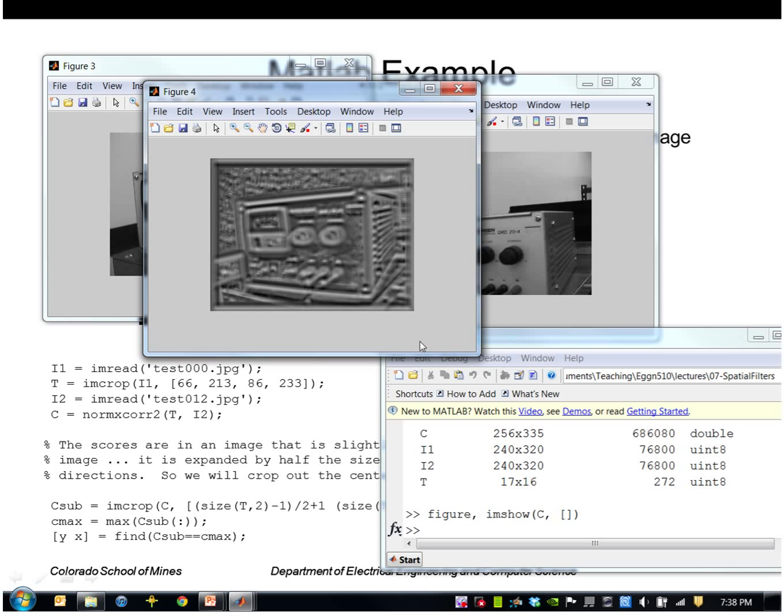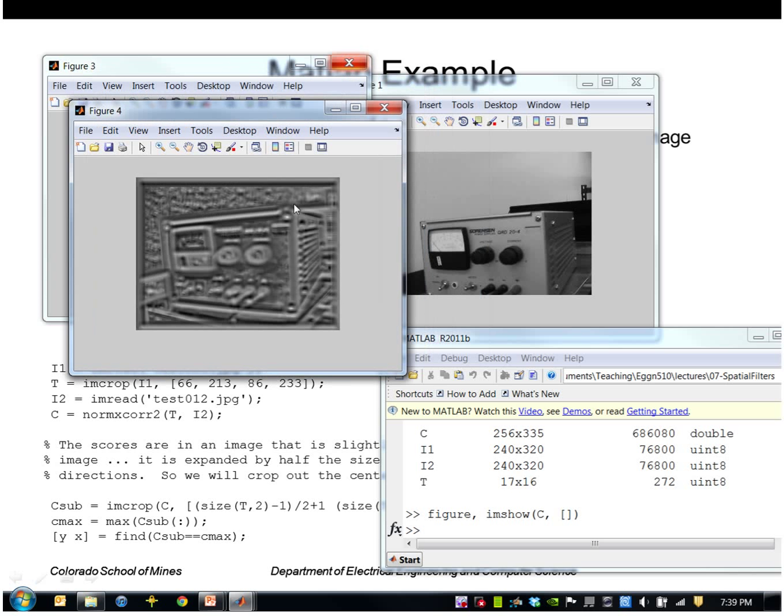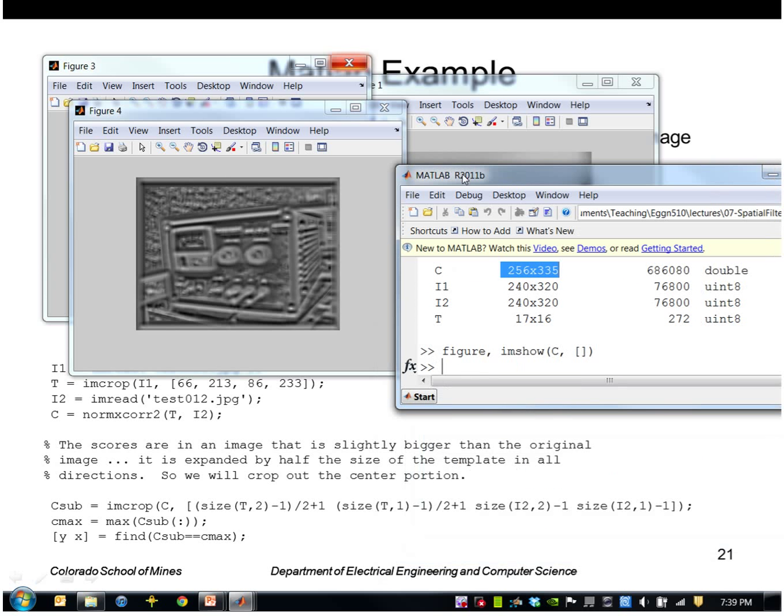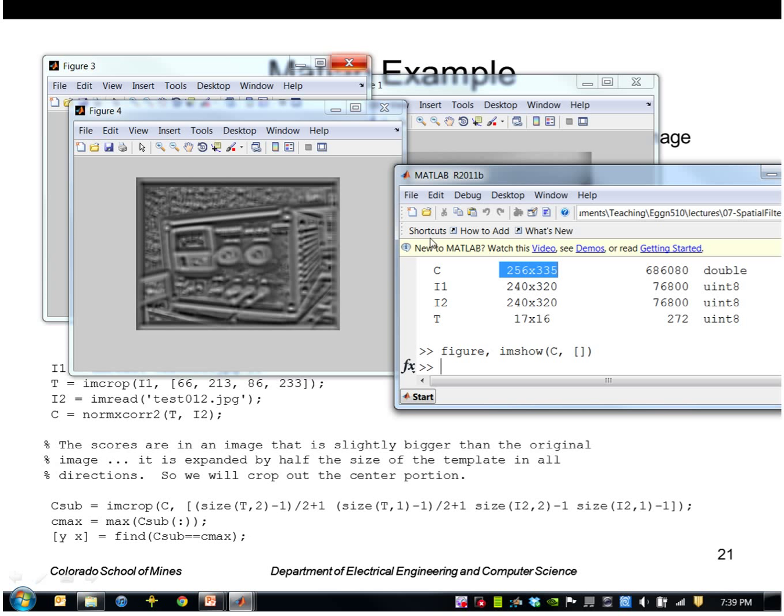One problem though is if I wanted to find the exact location, the score image is a little bigger than the original image. The original image was 240 by 320, the score image is 256 by 335, and the reason is it's bigger by half the size of the template because MATLAB is able to generate a score even if the template is not entirely inside the original image, if it just touches it slightly. So we'll just crop out the center portion and get a subset of that.